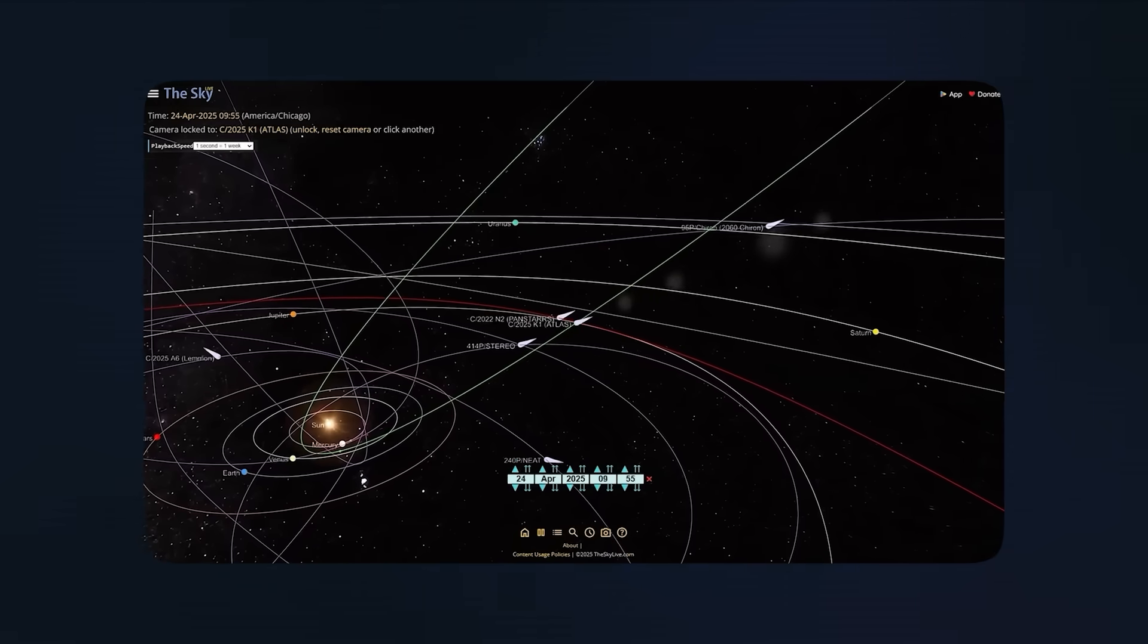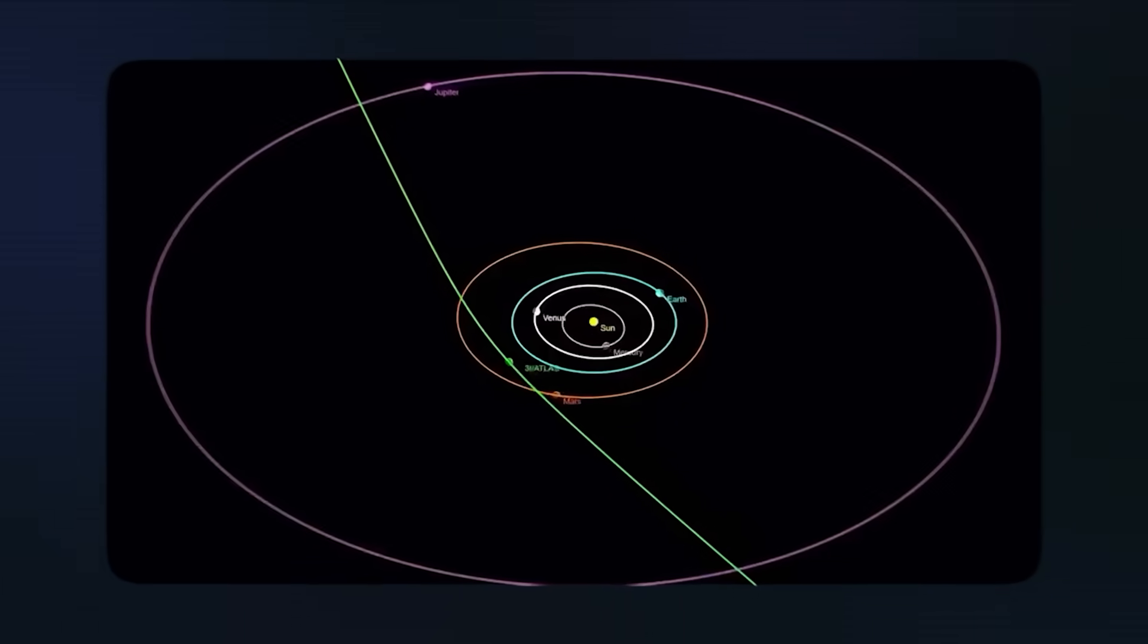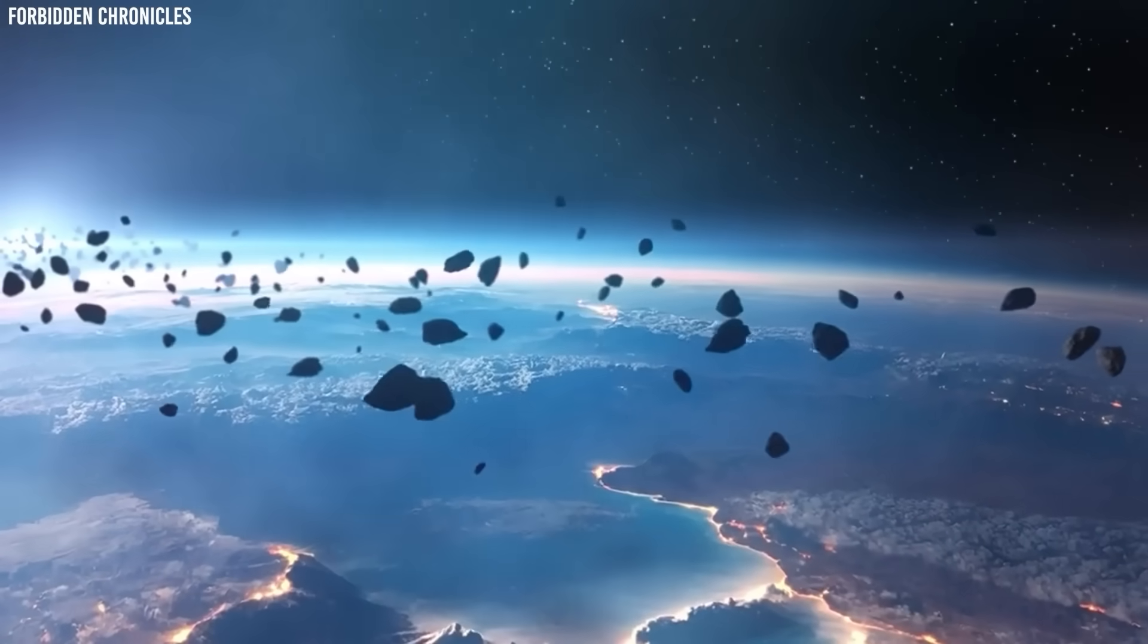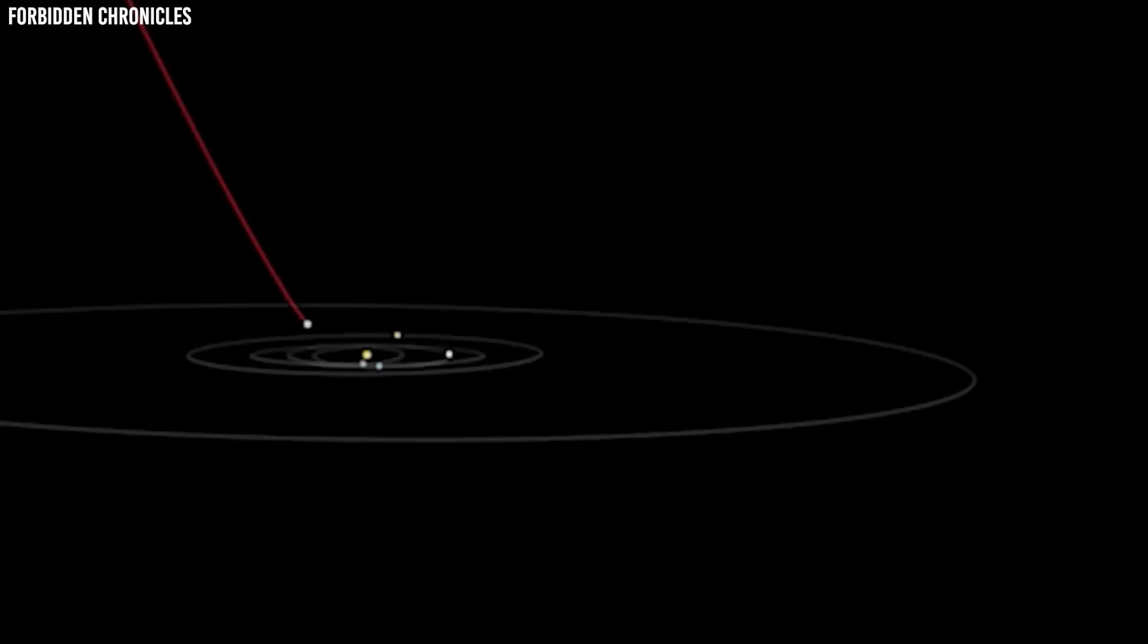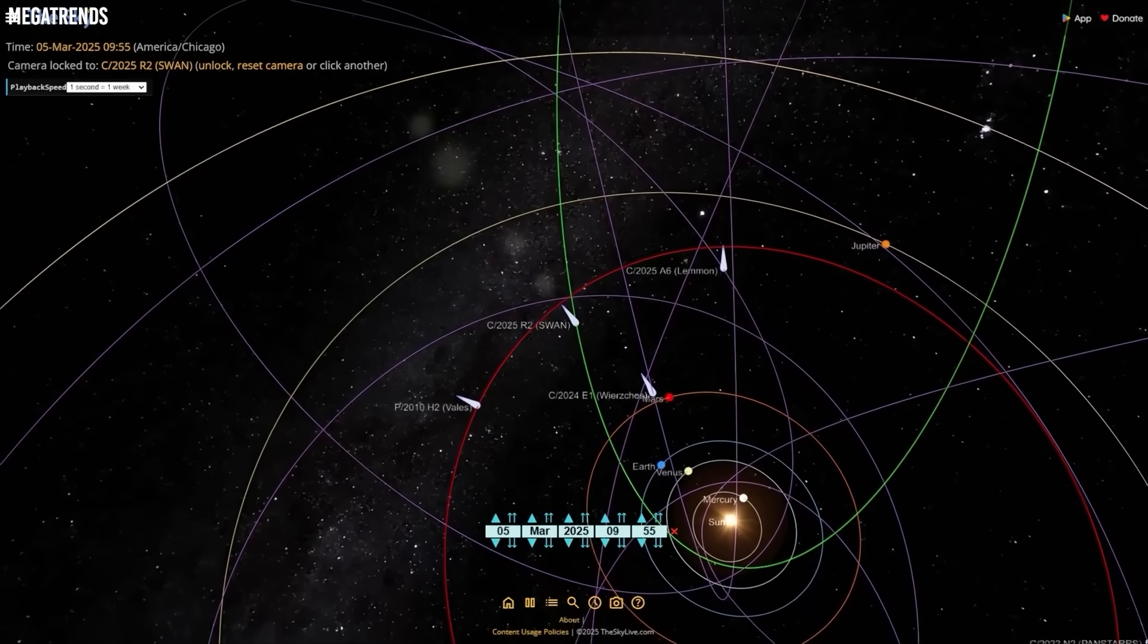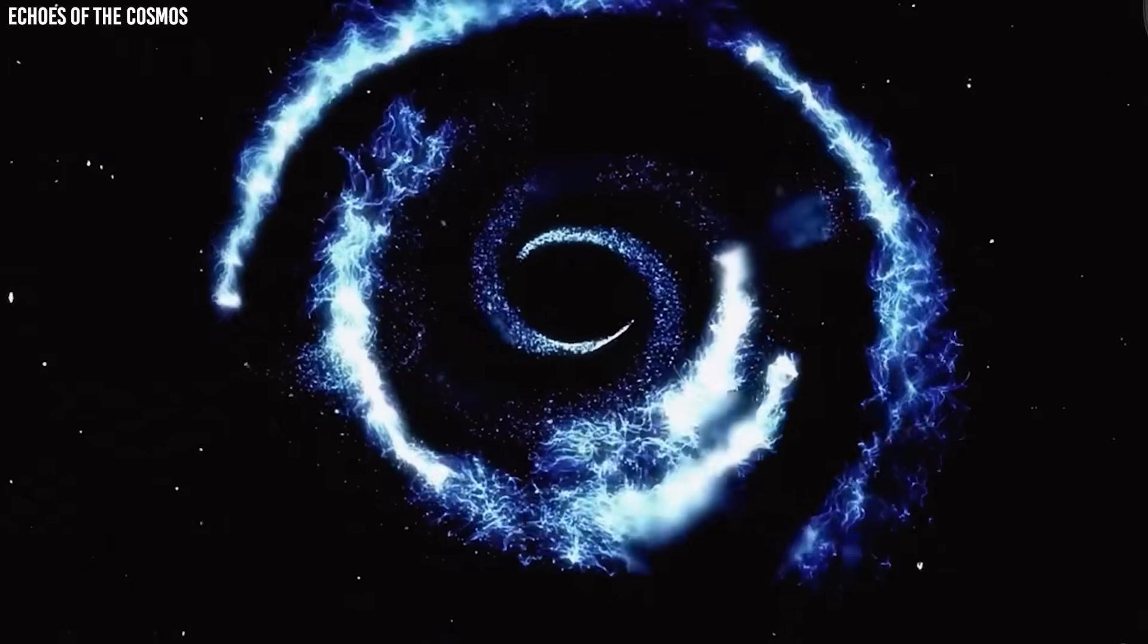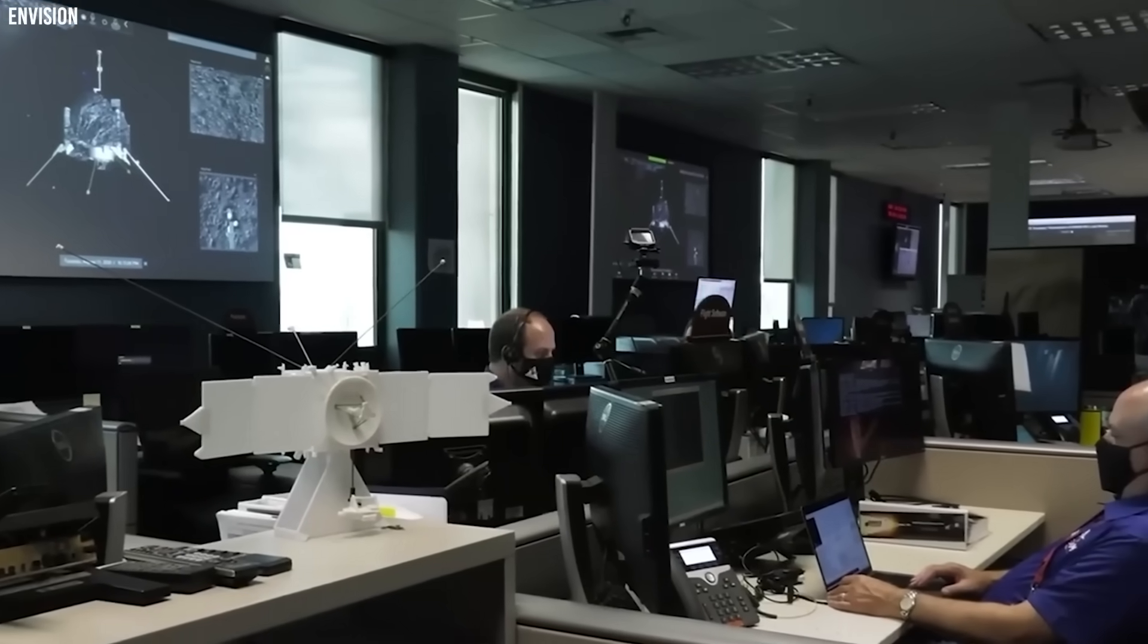The root of this disagreement lies in the extreme sensitivity of orbital calculations for nearly parabolic trajectories. When a comet's orbital eccentricity approaches 1, meaning its orbit is almost perfectly elongated, tiny errors in positional measurements can cascade into enormous differences in the calculated semi-major axis and orbital period. It's similar to trying to determine the exact shape of a nearly straight line when you can only see a tiny curved segment of it.